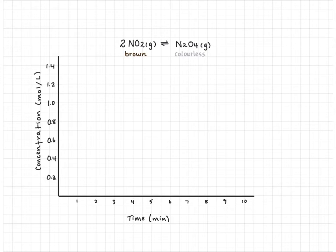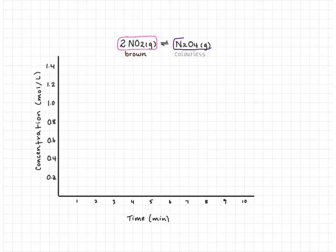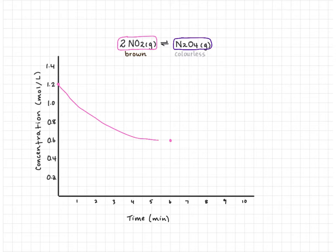We're now going to look at calculating the equilibrium constant from a graph of equilibrium, examining the dimerization of nitrogen dioxide. NO₂ is a brown gas and N₂O₄ is a colorless gas. On our graph, NO₂ is a pink line and N₂O₄ is a purple line. We fill a flask with nitrogen dioxide starting at 1.2 moles per liter, and at equilibrium the concentration of NO₂ drops to 0.6 moles per liter, established at 6 seconds.